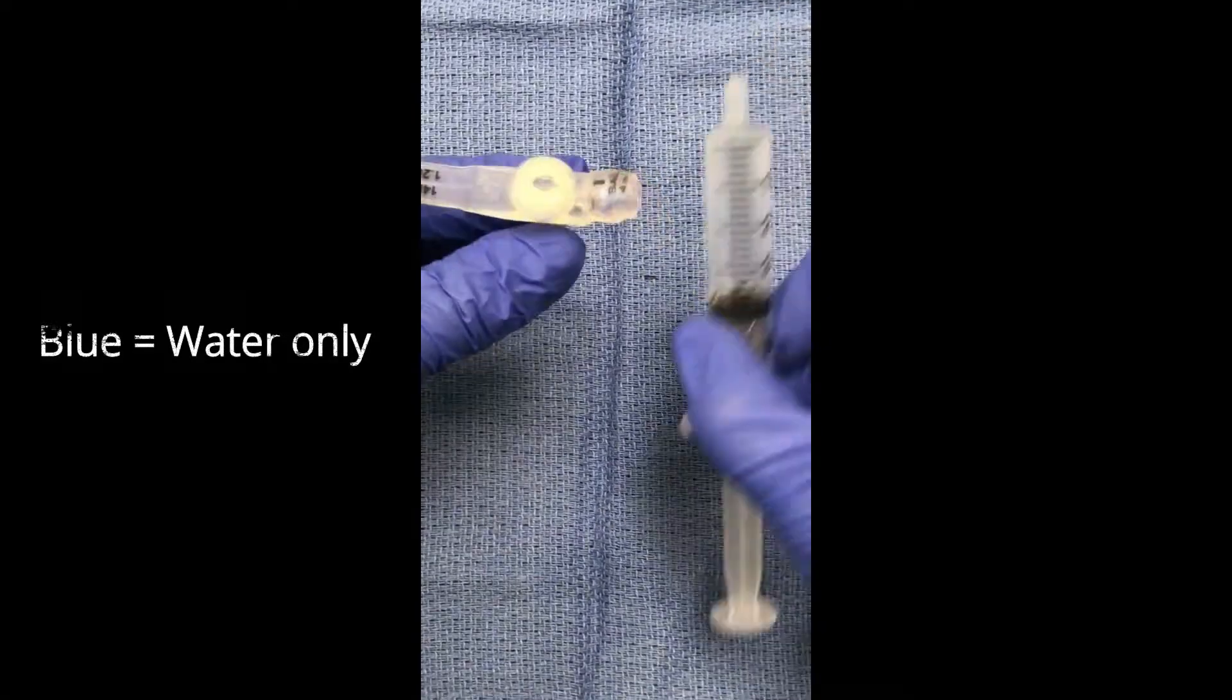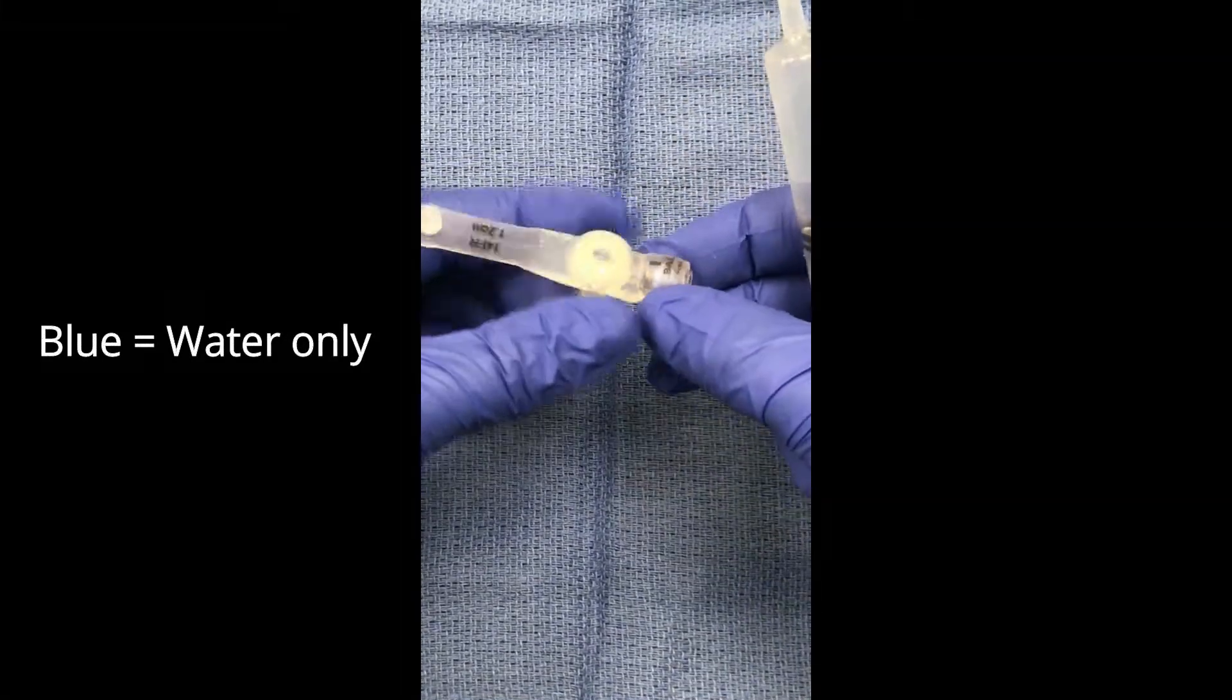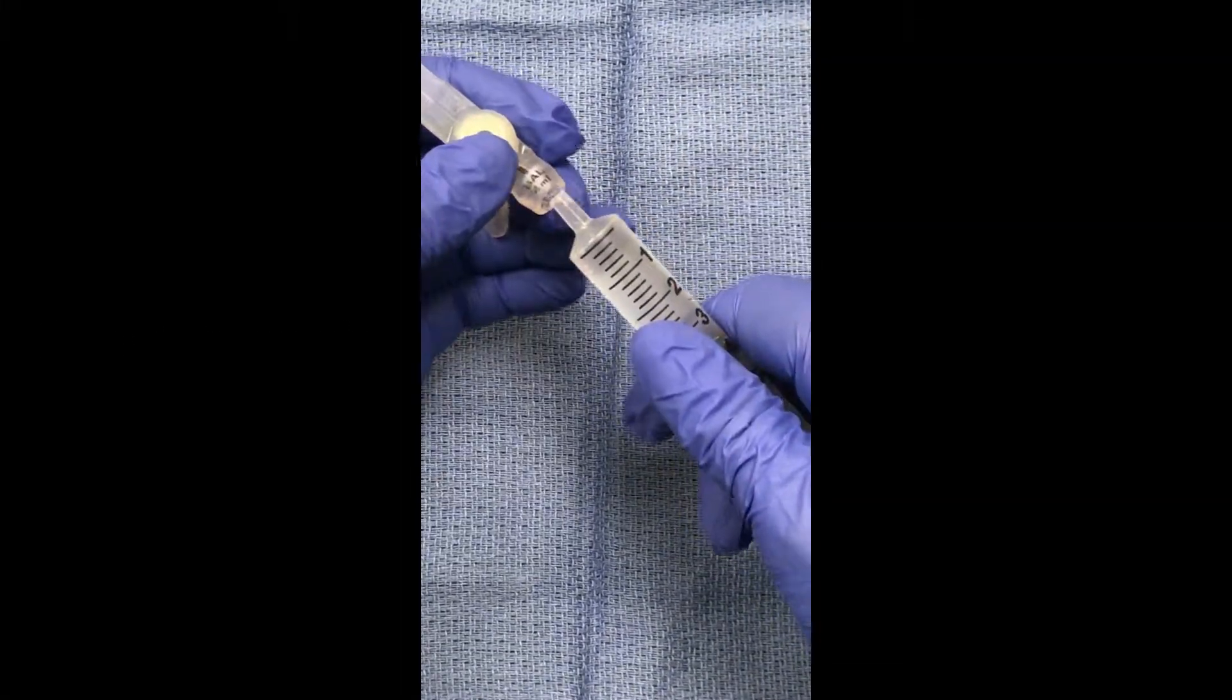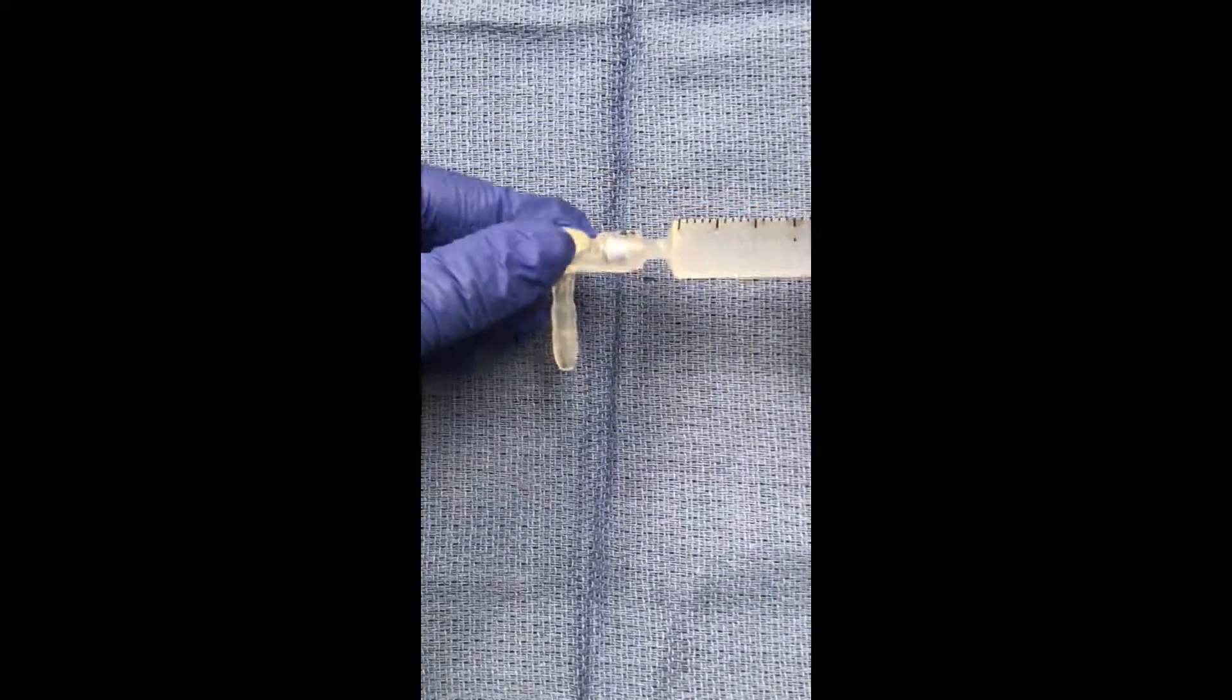In order to inflate, you'll need a slip tip syringe with the appropriate amount of water. Insert into the side port and slowly infuse the water.